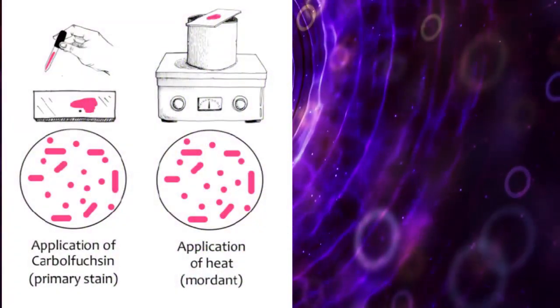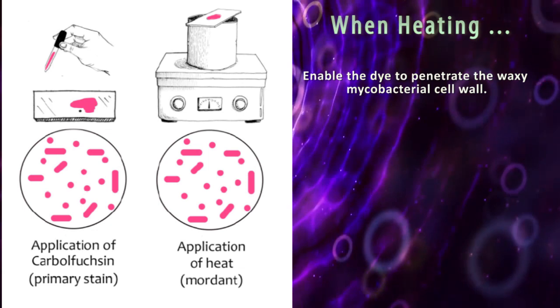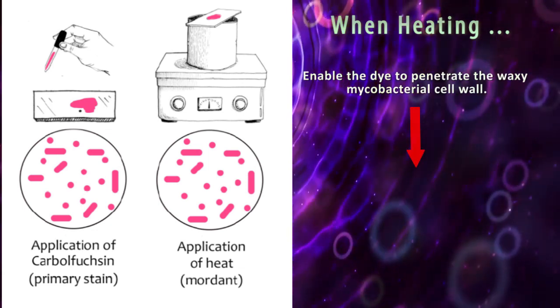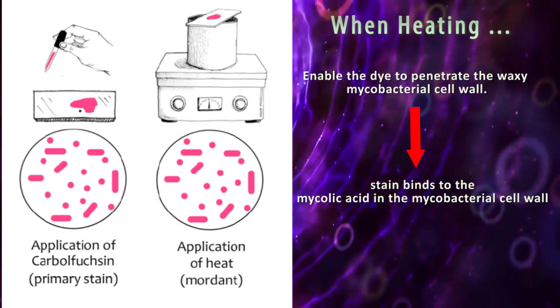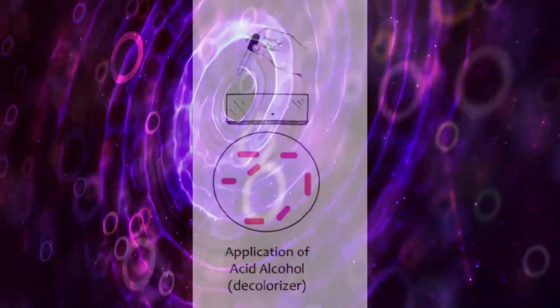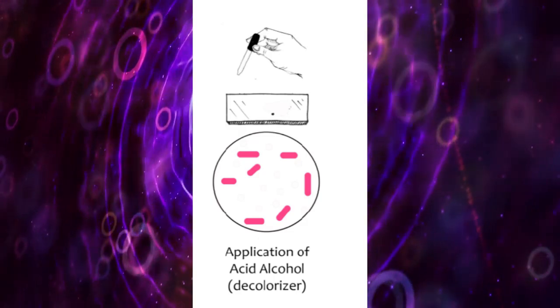The phenol carbolfuchsin stain is heated to enable the dye to penetrate the waxy mycobacterial cell wall. The stain binds to the mycolic acid in the mycobacterial cell wall. After staining,